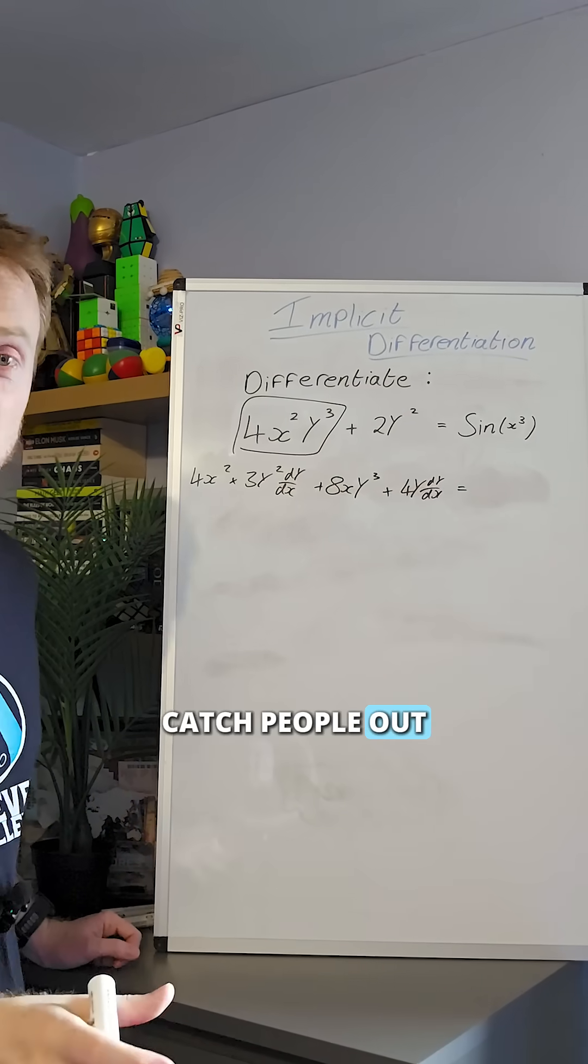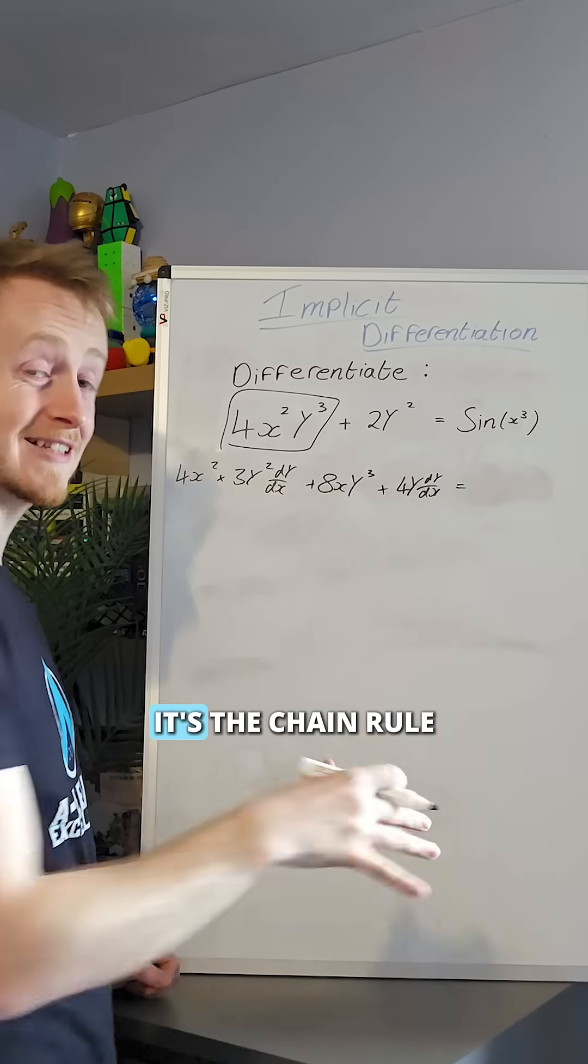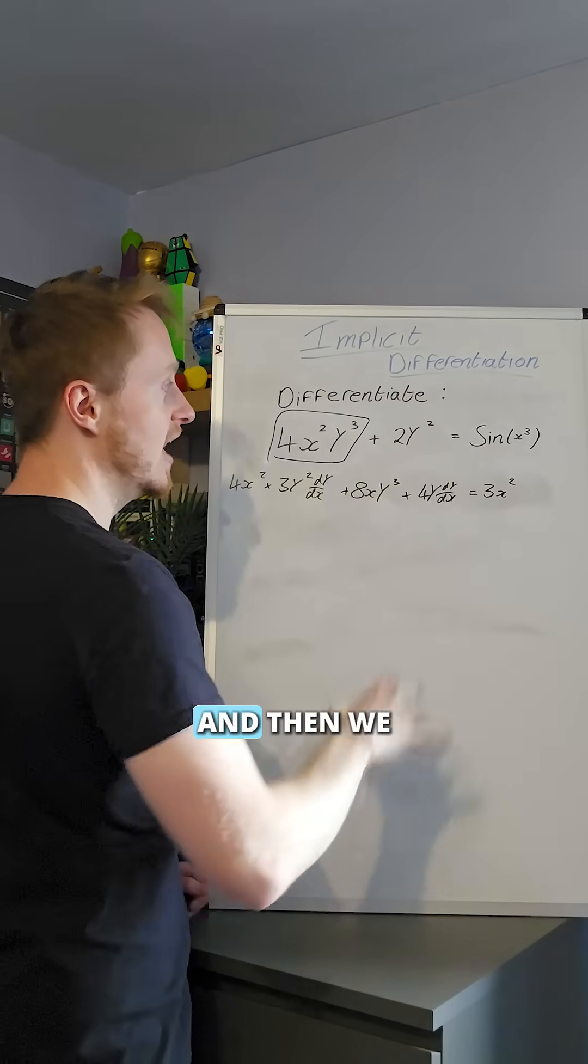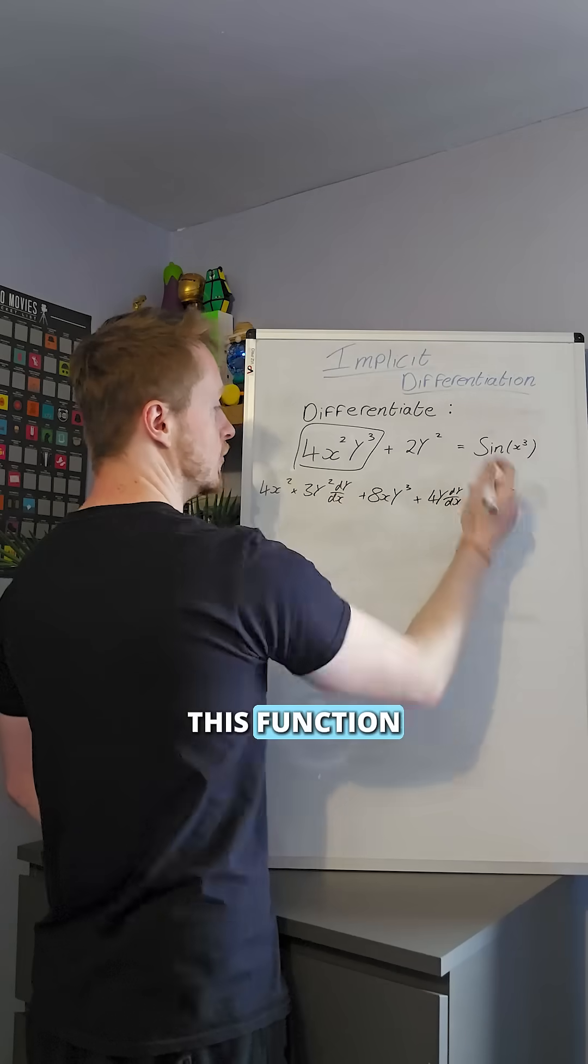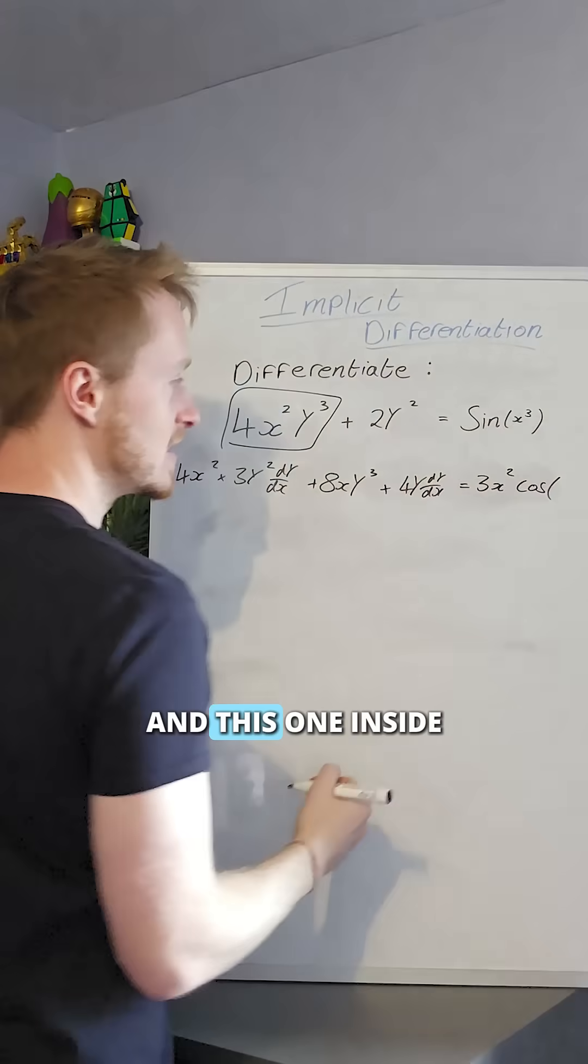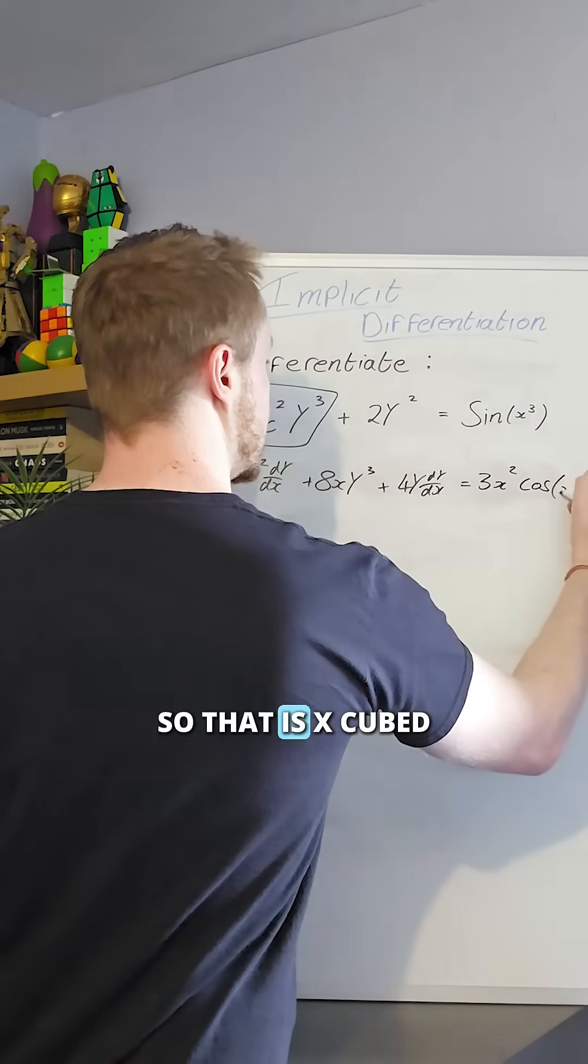This last bit is going to catch people out, right? We need to recognize it's the chain rule. So that's going to give us a 3x squared from the inside and then we differentiate this function. So sin x is going to go to a cos x and this one inside stays the same. So that is x cubed.